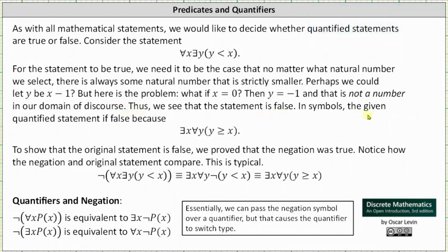Thus, we say the statement is false. In symbols, the given quantified statement is false because there exists an x for every y such that y is greater than or equal to x. And again, the original statement was, for every x, there exists a y such that y is less than x.